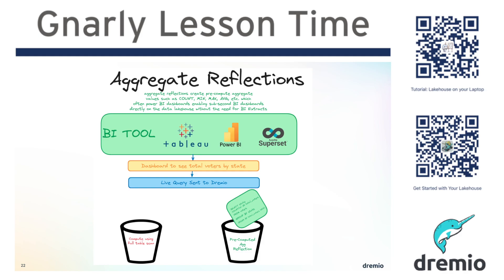Typically, the way you would accelerate these kinds of things is you would do things like BI extracts and cubes. The way BI extracts and cubes work is you would create another namespace — another physical thing that has its own name — and basically pre-compute aggregates: the mins, the maxes, the averages across different dimensions, and have a table that does that, then use that to build your dashboard.